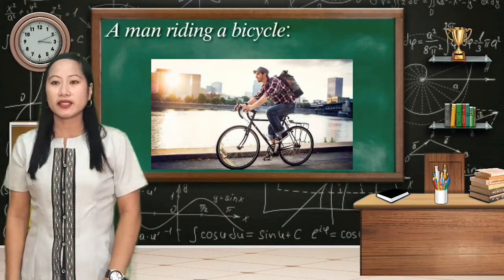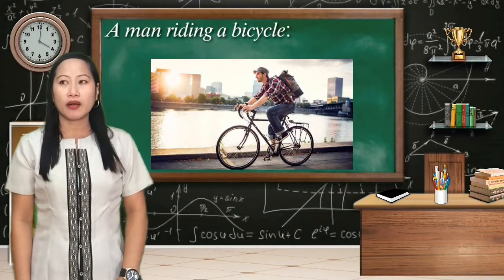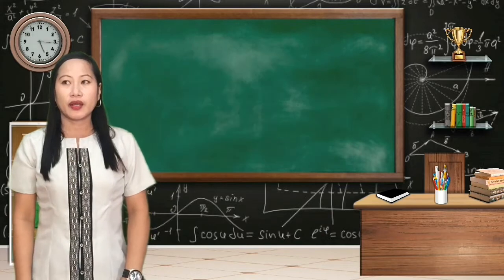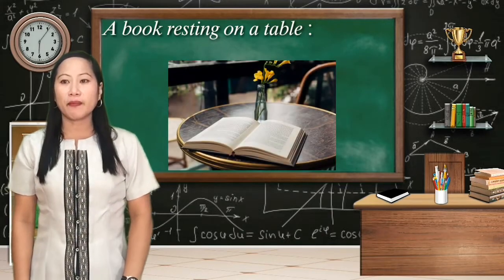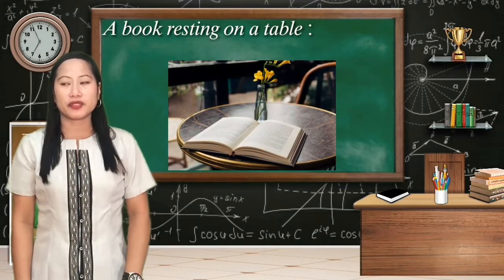A man riding a bicycle is an example of rolling friction. A book resting on a table is an example of static friction.